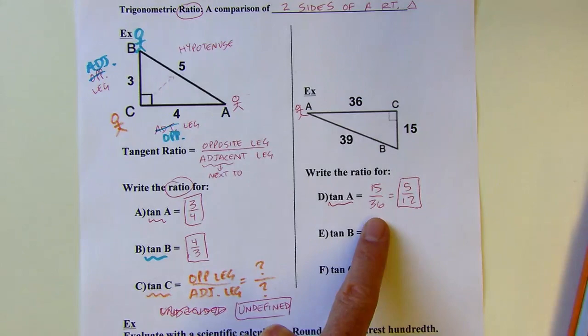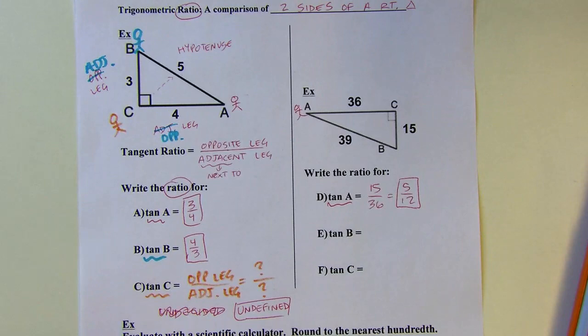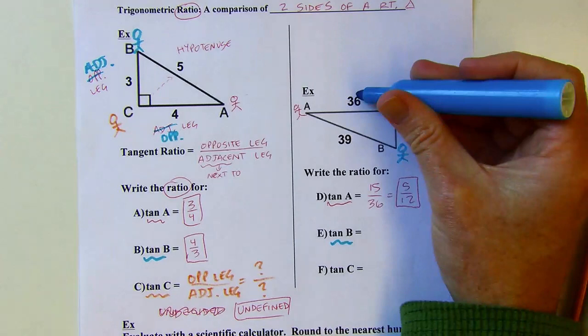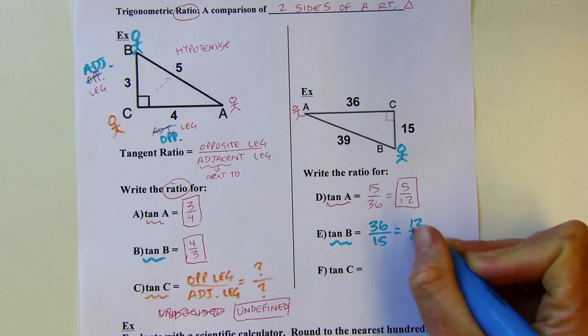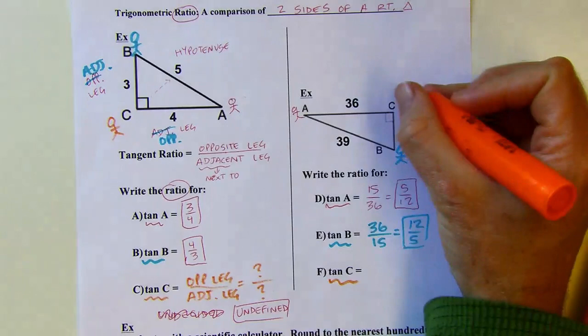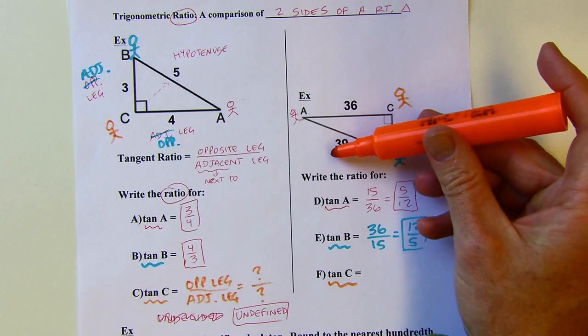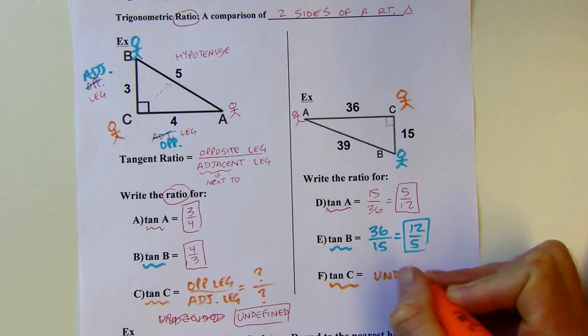Then when I move to B, now the opposite is 36 and the adjacent is 15. It reduces the same way, so it's going to be 12 fifths. And then again, when I'm down at C, that means I'm at the right angle, and I don't have an opposite leg. I have an opposite hypotenuse, and that's not part of this, so this is undefined. You can't take a tangent ratio from a right angle.